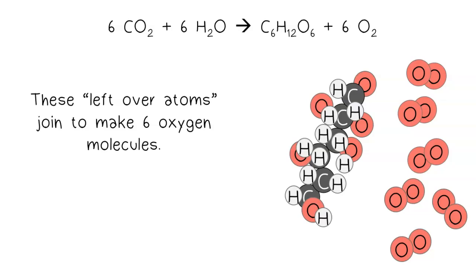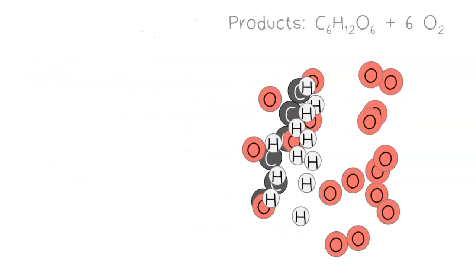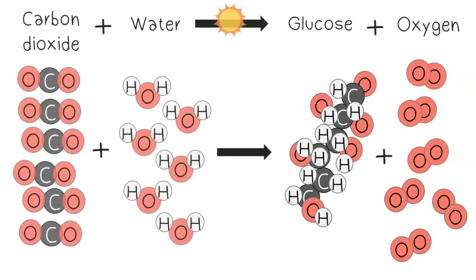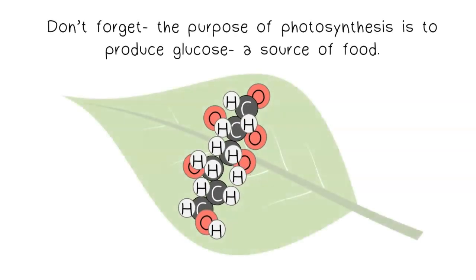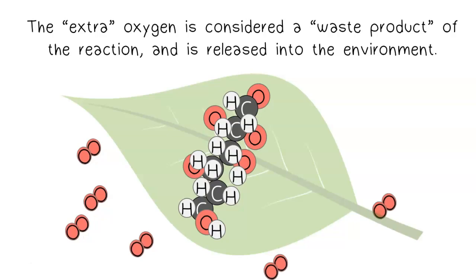These leftover atoms join to make six oxygen molecules. The reactants of photosynthesis are carbon dioxide and water, and the atoms of these molecules are rearranged and recombined to make the products of glucose and oxygen. This is the photosynthesis equation — a reaction that occurs in the cells of all plants. The purpose of photosynthesis is to produce glucose, a source of food. The extra oxygen is considered a waste product of the reaction and is released into the environment.